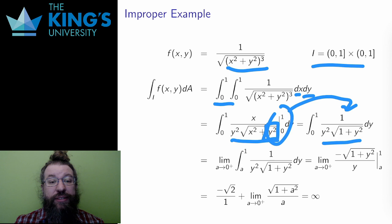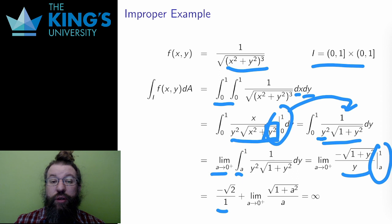Again, I asked a computer for the antiderivative and evaluate it on the endpoint. At y equals 1, I get negative root 2 over 1. For the other piece, I evaluate at a and take the limit. In this case, the numerator approaches 1 and the denominator approaches 0 from the positive side. So the limit is positive infinity.